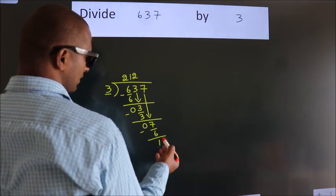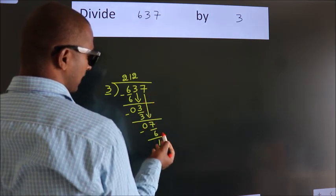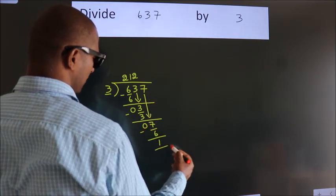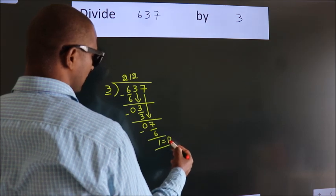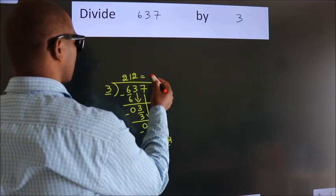After this, no more numbers to bring down. So, we stop here. This is our remainder. This is our quotient.